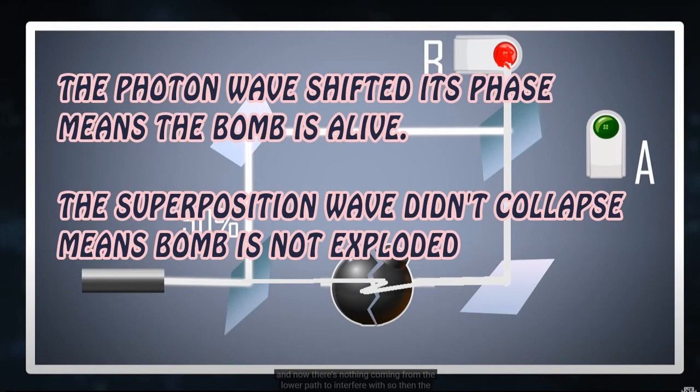The photon wave shifted its phase means the bomb is alive. The superposition wave didn't collapse means the bomb is not exploded. It is not weird, right?